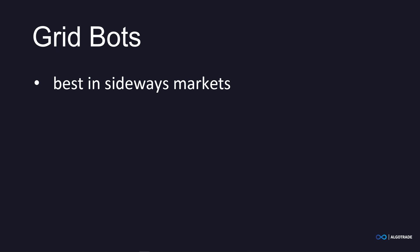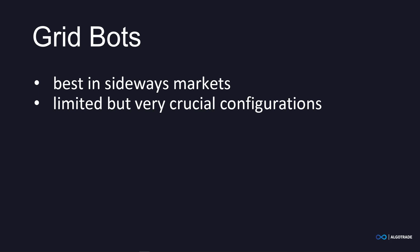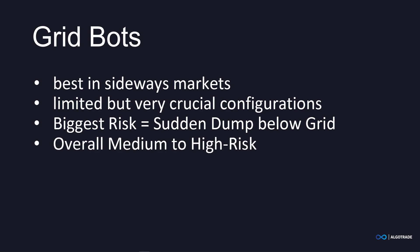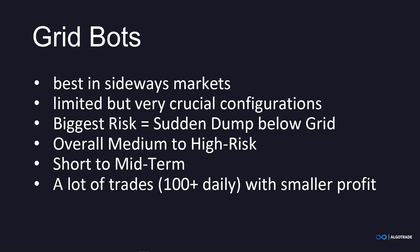As opposed to DCA bots, grid bots don't offer a lot of configuration possibilities, but there are still some settings you absolutely have to think about, or you could lose all your money very quickly. The biggest risk factor is a sudden dump below your predetermined grid, which would stop the bot, most likely leaving you with a small loss. Overall, I would say grid bots are medium to high risk. Grid bots focus more on short to mid-term gains while making a lot of trades — up to 100 daily — each making a very small profit. You could also say that grid bots are scalper bots because they trade on very small timeframes with small profits on each trade.